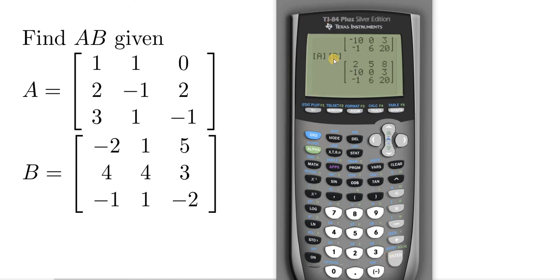So really, really nice. If you had to find B times A, we don't have to. But if you had to, you would first type in B. So you would do B. Second matrix, A. Enter. Boom. That would be B times A. Okay. I hope this video has been helpful.